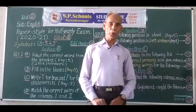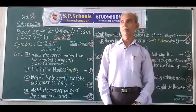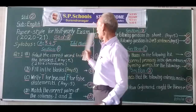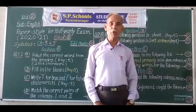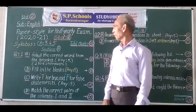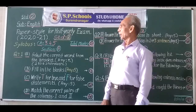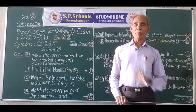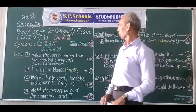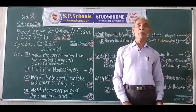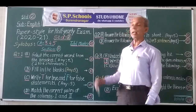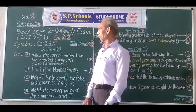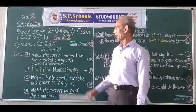Hello, let's take a look at the paper style for the first-time half-year examination 2020-2021. The syllabus contains chapters 3, 4, and 5. The question paper will carry a maximum of 80 marks. The paper is divided into four sections: Section A, Section B, Section C, and Section D.